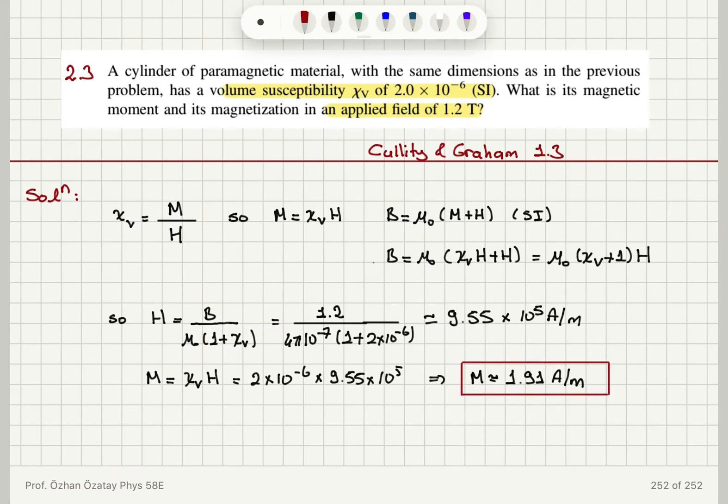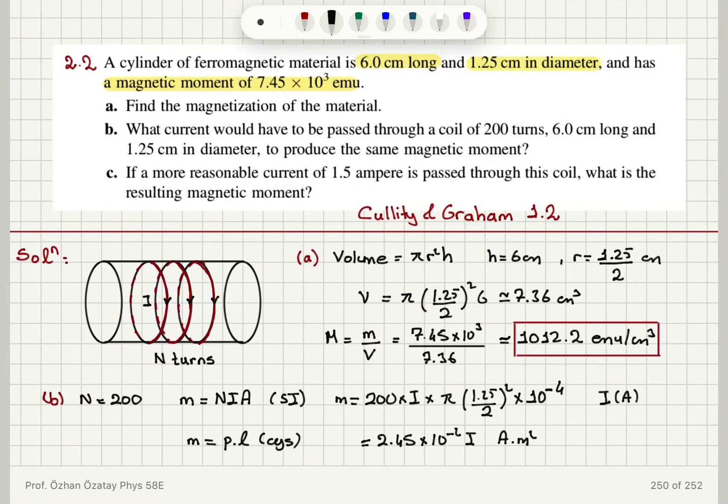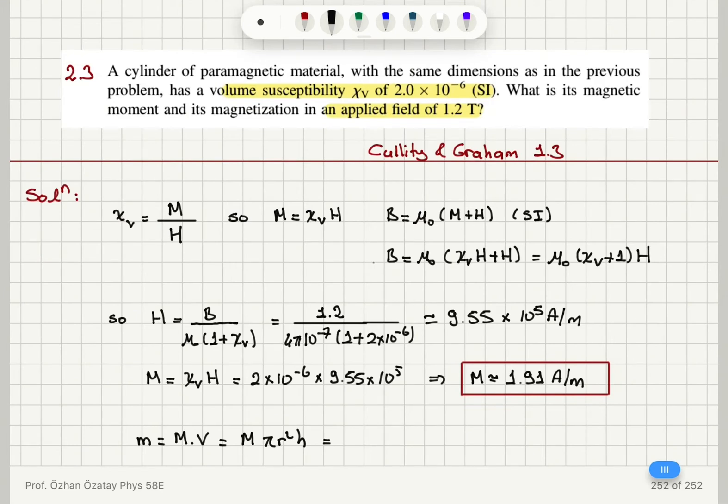Now in order to obtain the magnetic moment I have to multiply the magnetization with the volume. And if you remember, this is a cylinder, so we have πr² times the height. It's the same parameters given in the previous problem: 6 centimeters long, 1.25 centimeters in diameter.